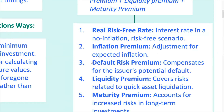Number three is the default risk premium. Not all borrowers are created equal — lending to a startup is riskier than lending to the government. The default risk premium makes up for the chance that the borrower might not repay the loan. Number four is the liquidity premium. If you need to sell your investment quickly, you might have to take a lower price. This premium makes up for the difficulty of selling an asset without taking a big loss — think about selling real estate fast versus selling stocks.